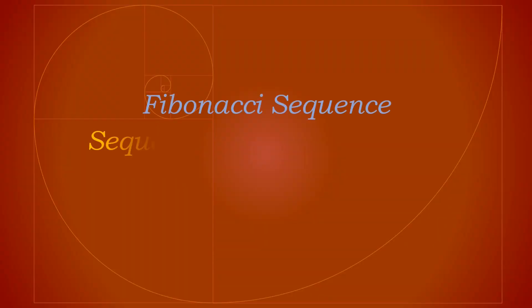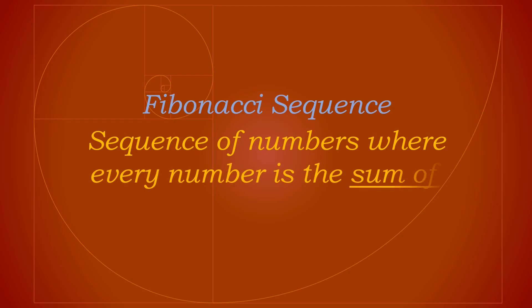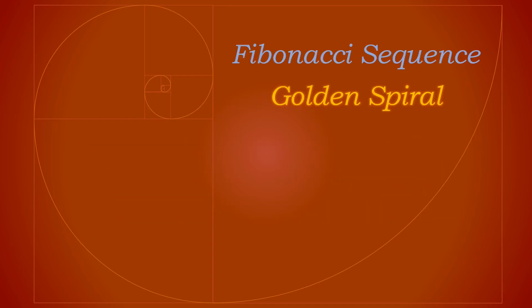The Fibonacci sequence is a sequence of numbers where every number is the sum of the previous two numbers. It starts with zero, one, one, two, three, five, eight, and so on.